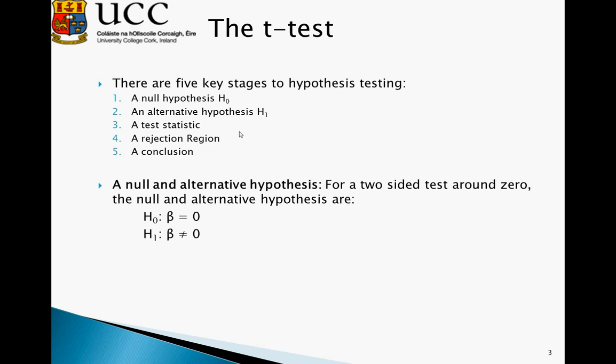The null hypothesis will always contain an equal sign, and the alternative hypothesis will always contain every other possible outcome for the value. So in this instance, since beta is equal to zero in the null hypothesis, the alternative hypothesis must be that beta is not equal to zero.